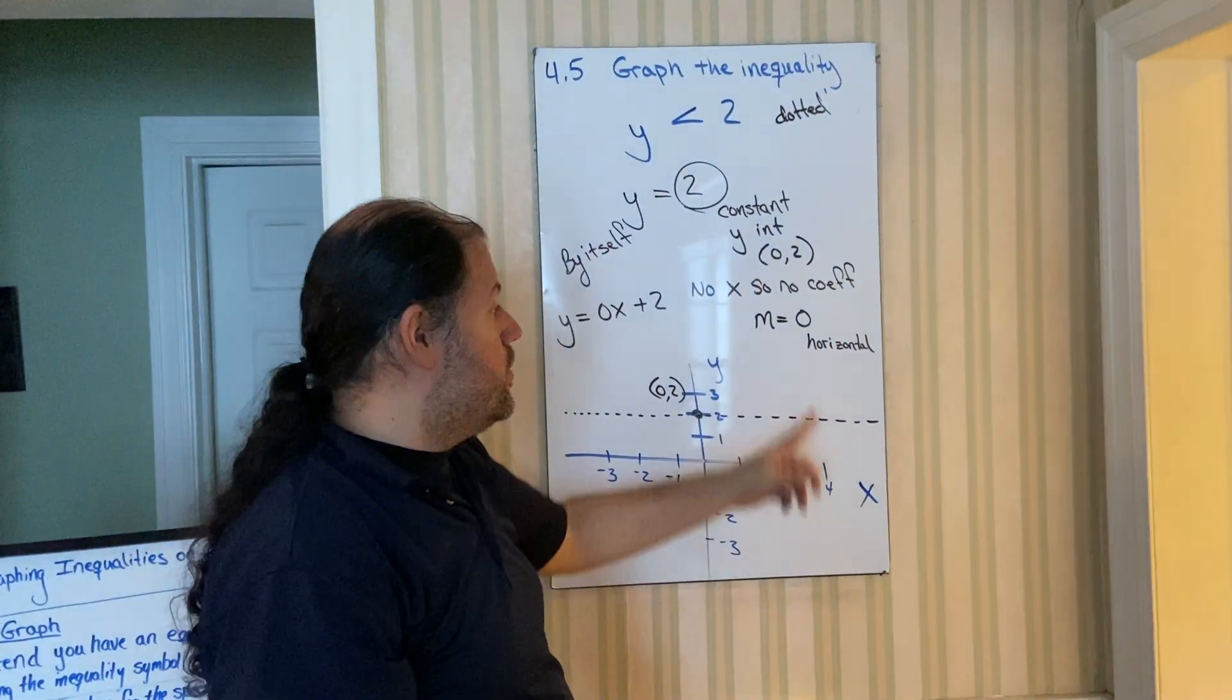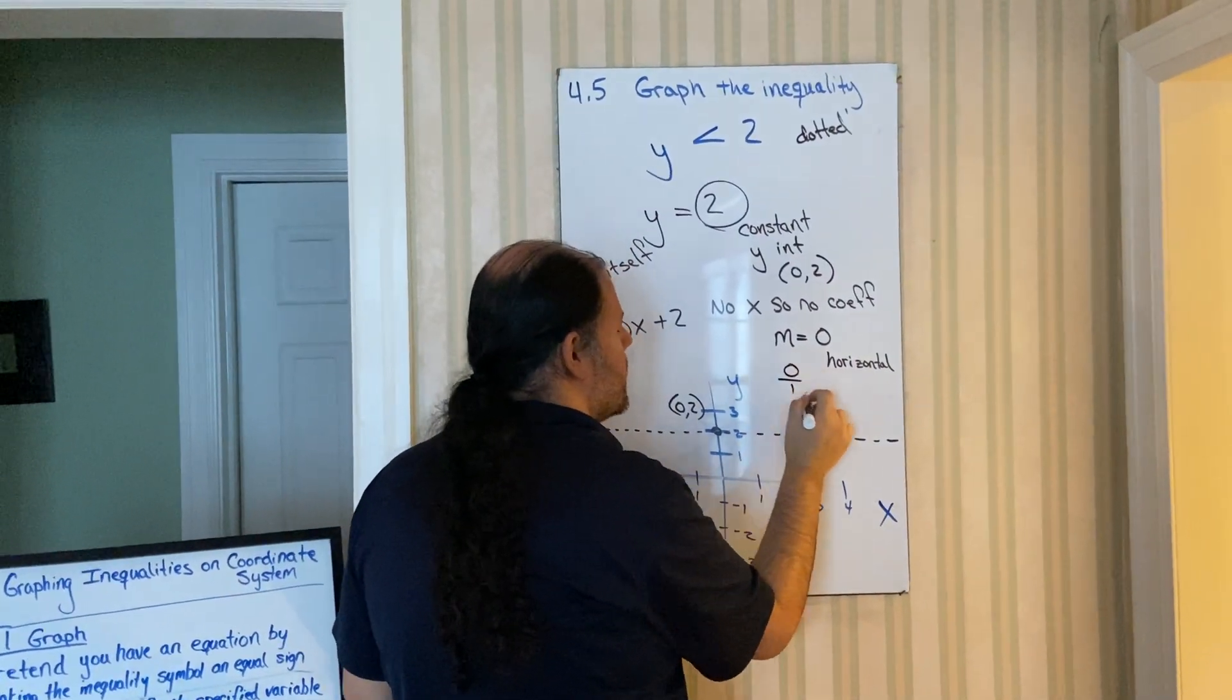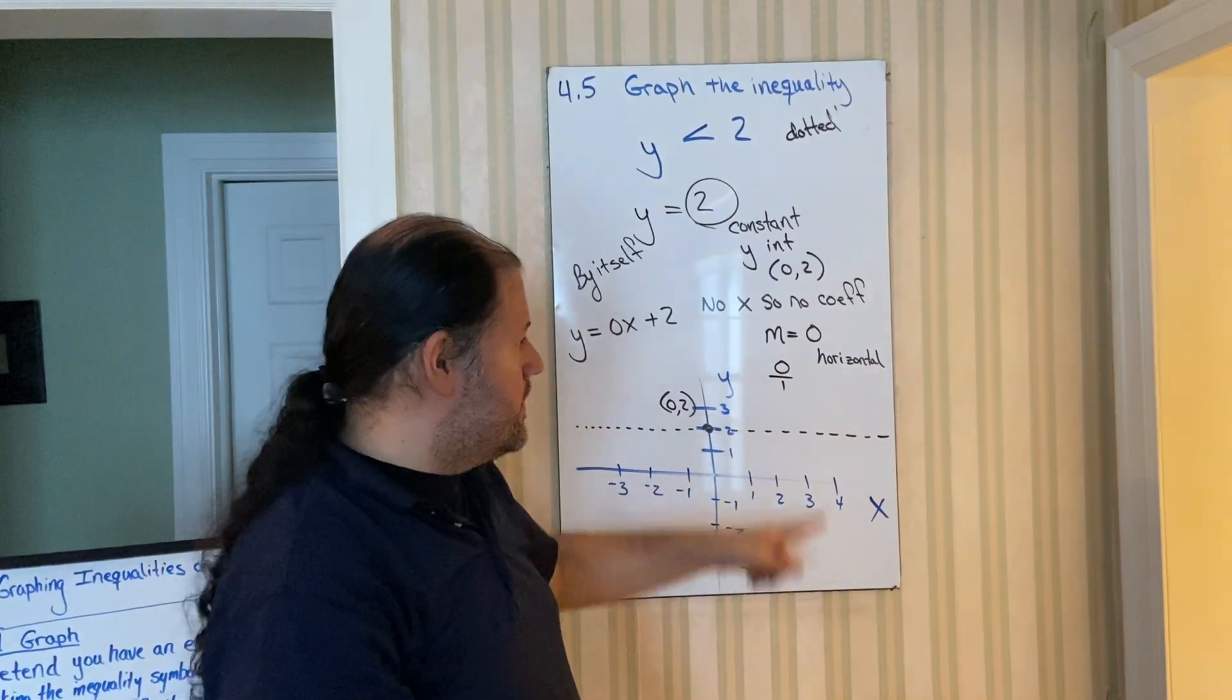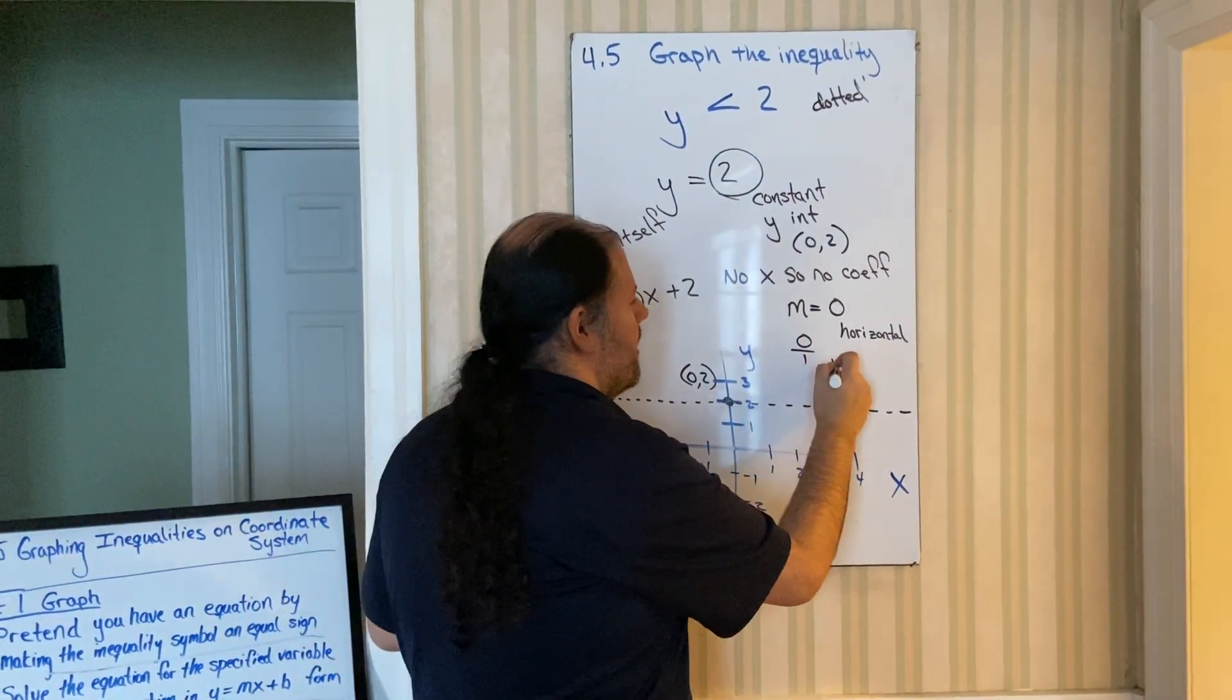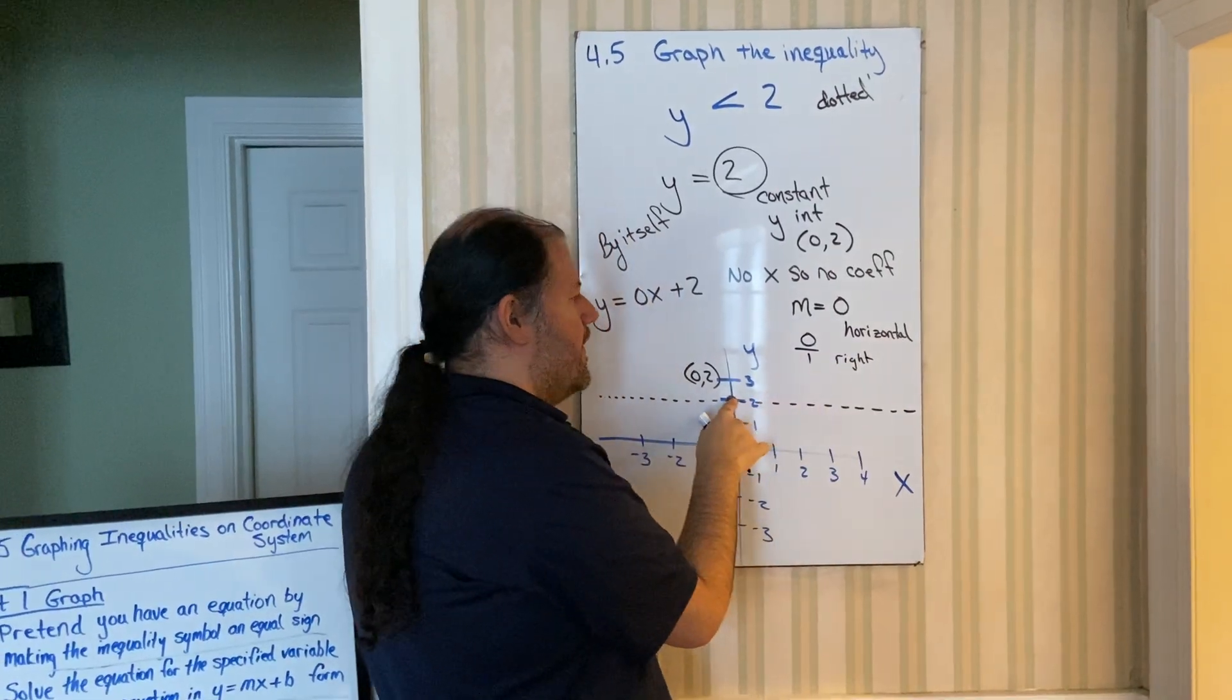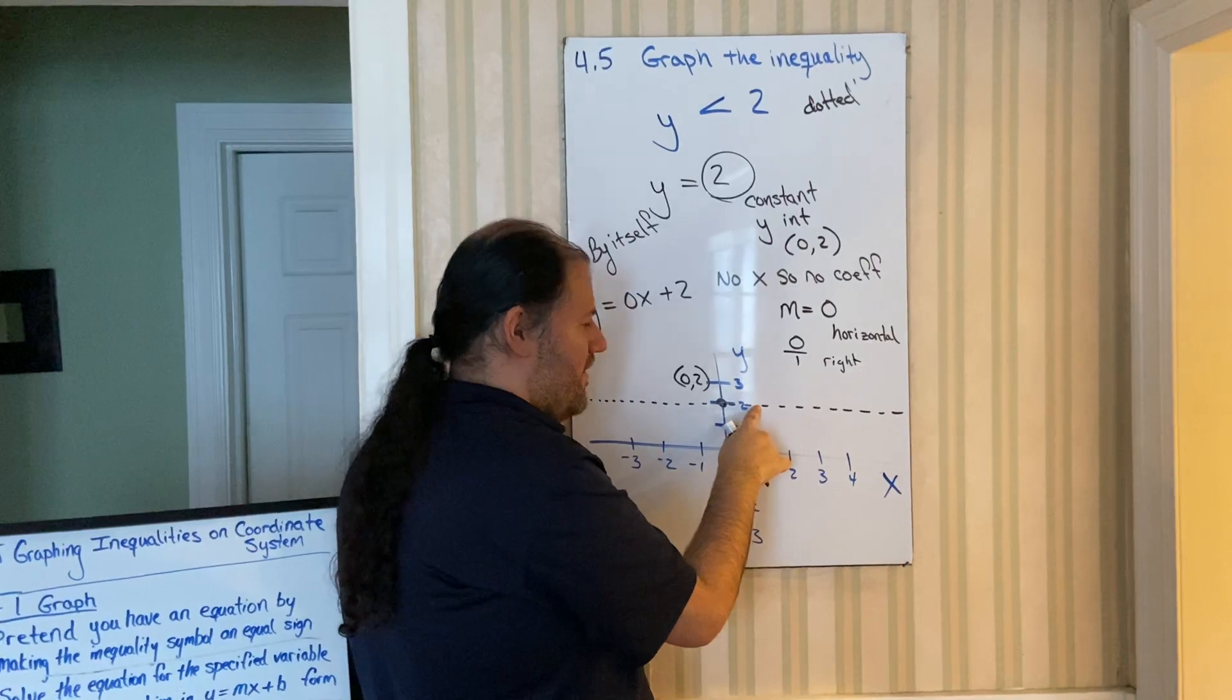See how it's not increasing or decreasing? It's perfectly flat. If you didn't know that, you could take the slope and put it as a fraction. Zero over one. I told you any whole number, you can put it over one. So the zero tells us don't go up, don't go down. But the one says go to the right.